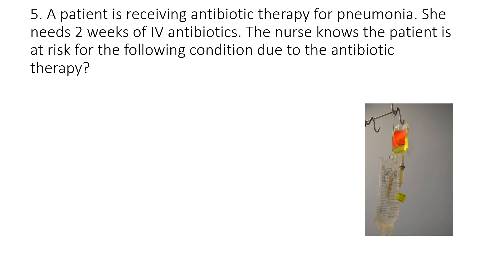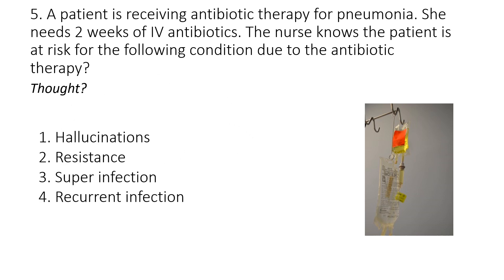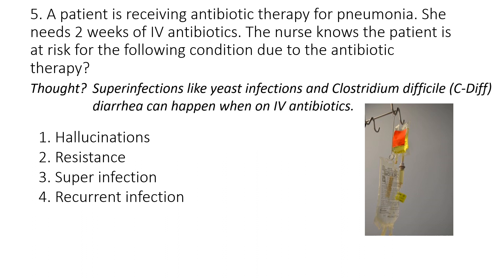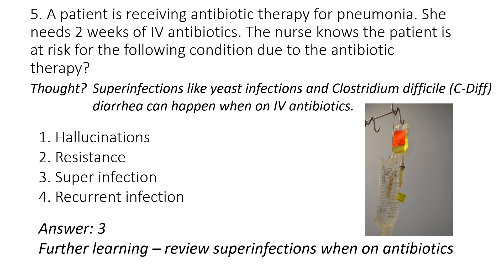Last question, number five: a patient is receiving antibiotic therapy for pneumonia and needs two weeks of IV antibiotics. The nurse knows the patient is at risk for the following condition due to the antibiotic therapy. Options: number one, hallucinations; number two, resistance; number three, superinfection; number four, recurrent infection. The answer is number three. When somebody is on IV antibiotics for a few weeks, normal flora in the body — the normal bacteria and yeast that don't cause us problems — can tend to overgrow and cause things like yeast infections or C. difficile, which causes diarrhea. If you need to review superinfections and what to look out for when somebody's on antibiotics, it's a good idea to also look at how you would treat them.